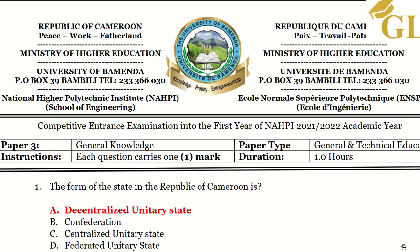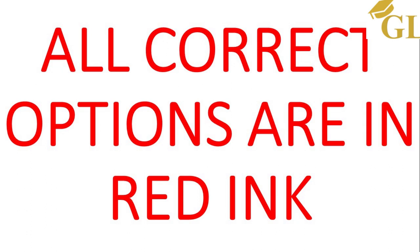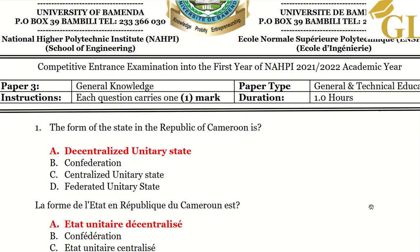If you have the opportunity to revise any other question paper, then you should do so. Question one of this question paper reads: the form of state in the Republic of Cameroon is — A: decentralized unity state, B: confederation, C: centralized unity state, D: federated unity state.